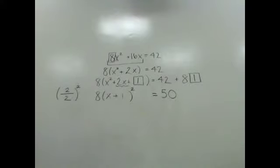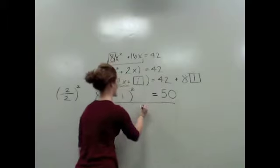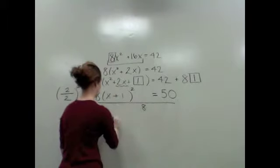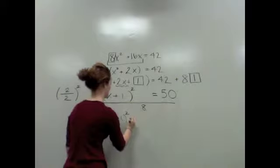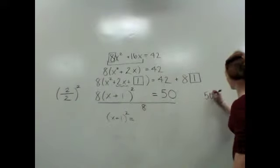Alrighty. So now what I'm going to do is I'm going to divide everything by 8. So we have (x + 1), the quantity squared equals 50 divided by 8.